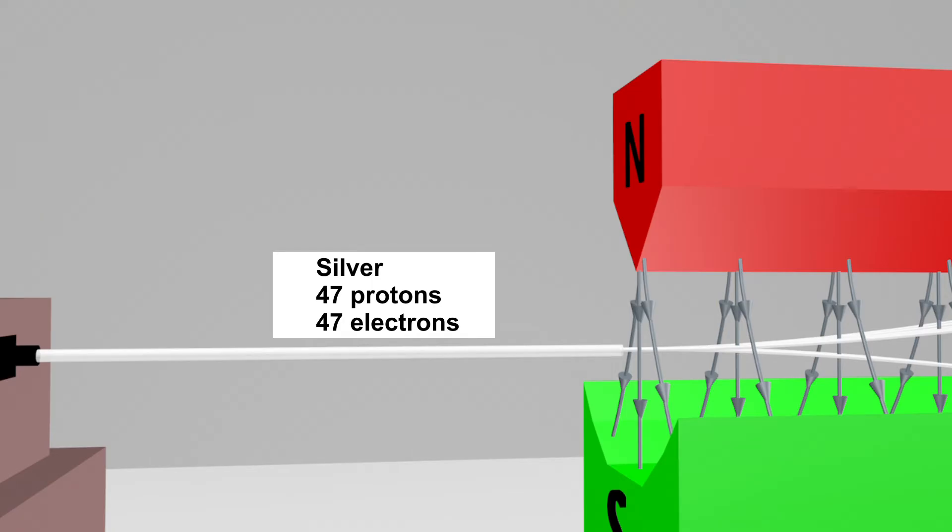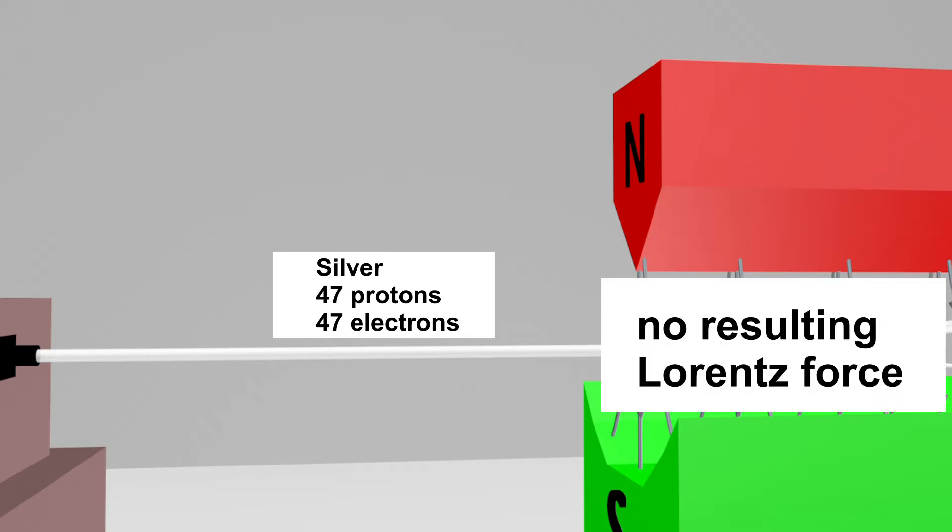They are complete silver atoms with an equal number of protons and electrons. Therefore, no resulting Lorentz force acts on the silver atoms.